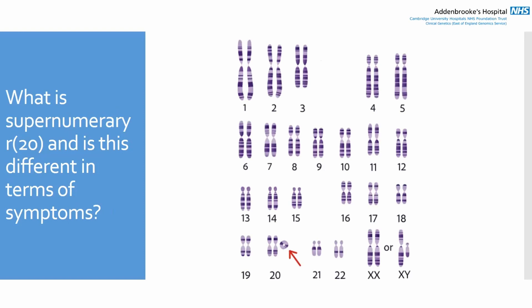I had a couple of questions about supernumerary ring 20 and monosomy ring 20. Supernumerary ring 20 is where there's an extra copy of chromosome 20 — you have the two typical linear chromosome 20s and then the ring structure is an additional chromosome. This is considered a different condition to ring 20 syndrome, because someone with supernumerary ring 20 has an extra copy of some of the genes on chromosome 20, and that extra genetic material is usually what causes their symptoms.